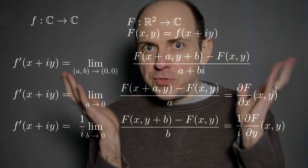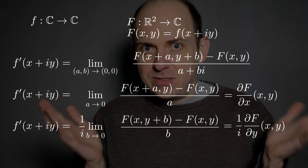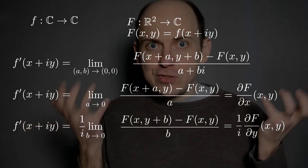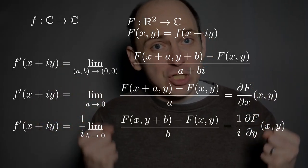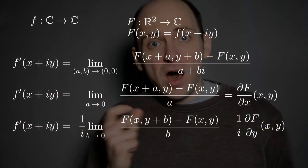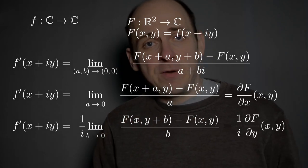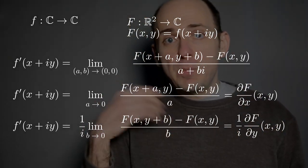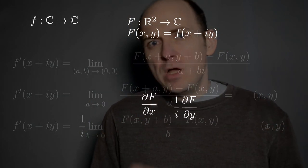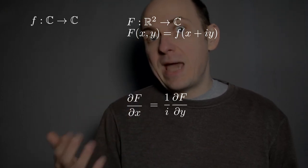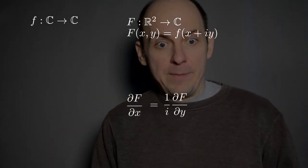So if the function little f is holomorphic — if it's complex differentiable — then both of these expressions involving partials of big F are the same: they're both computing the complex derivative of little f. This means that ∂F/∂x is equal to (1/i) · ∂F/∂y.